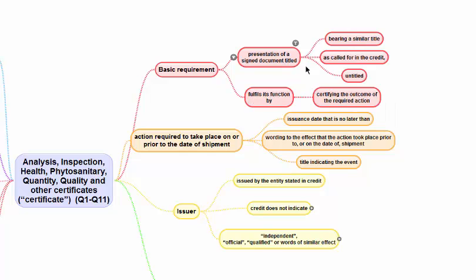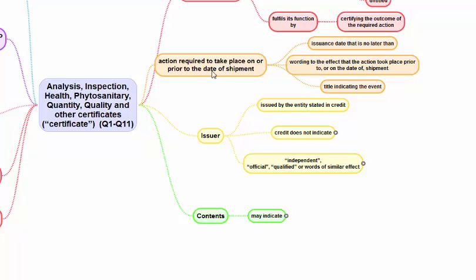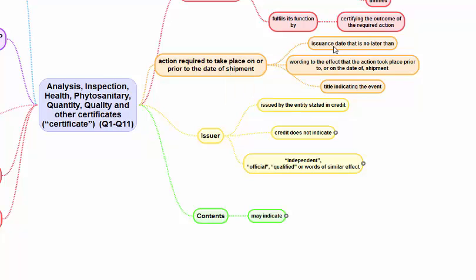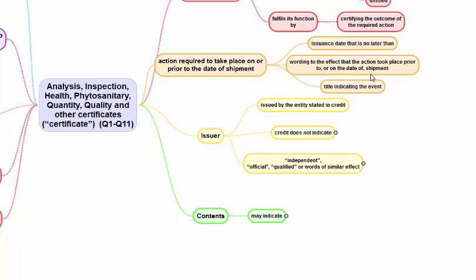The document could have a similar title or the same title called for in the credit, or it can be untitled. That is the basic requirement of the certificate. The issuance date should be no later than the date of shipment.